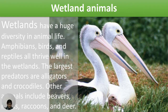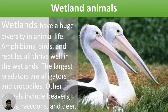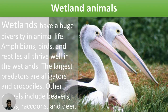Wetland animals: Many animals that like muddy or water-saturated places live in wetlands. Wetlands have a huge diversity of animal life — amphibians, birds, and reptiles all thrive there. The largest predators are alligators and crocodiles. Other animals include beavers, minks, raccoons, and deer.